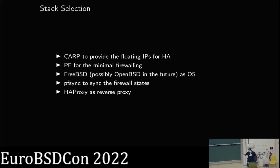We had to select the stack. We ended up with CARP for the floating IPs. For the minimal firewalling and some things that come up later, we use PF. We currently run FreeBSD, and I'm also thinking about testing it with OpenBSD. I just didn't have the time because, as always, once the concept was finished, somebody wanted to put it into production. We also have PFsync for syncing the firewall state — it's more or less nothing special, but it had to be integrated.